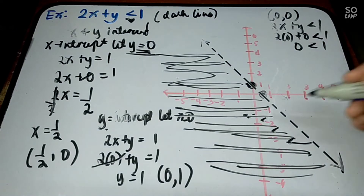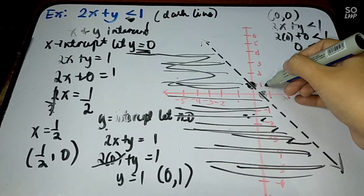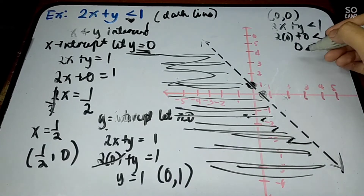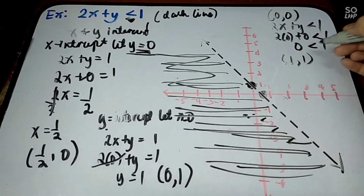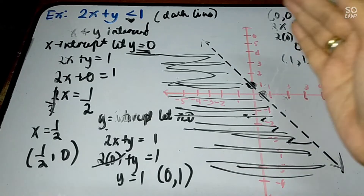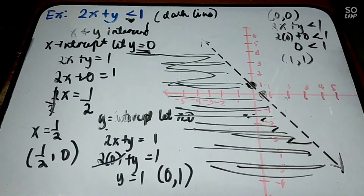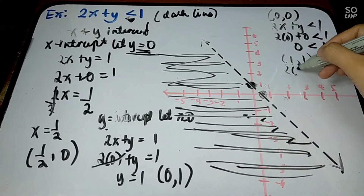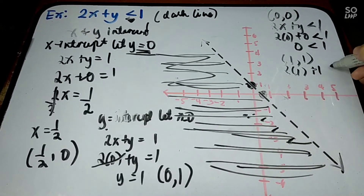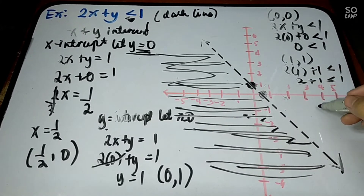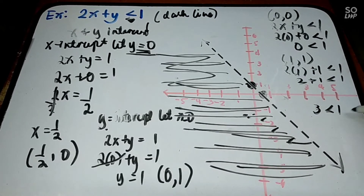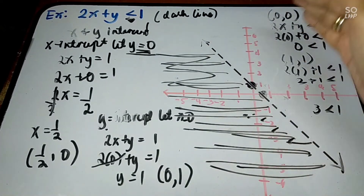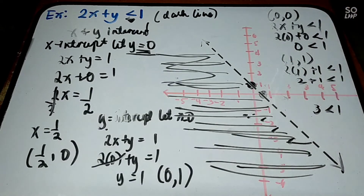Let us verify with point (1, 1), which is above the line: 2 times 1 plus 1 less than 1 gives 2 plus 1, which is 3 less than 1. Is 3 less than 1? That is false. So all points above the line will be false, confirming that the solution region is below the dashed line. That is the simplest way to graph a linear inequality.